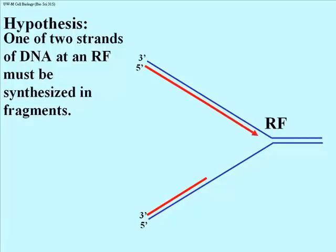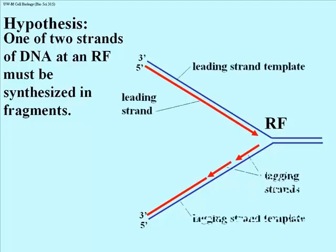Here is our replication fork, modeling continuous synthesis of one strand of DNA in the 5' to 3' direction towards the replication fork, and the replication of fragments of DNA, also 5' to 3', but extending away from the replication fork. The strand made continuously is called the leading strand, while the strand made in pieces is called the lagging strand, in part because its synthesis is slowed down by the need to put the pieces together.